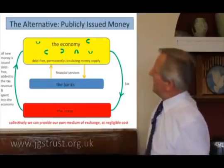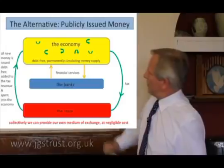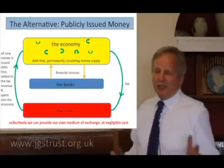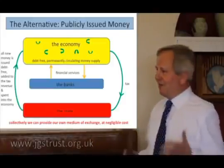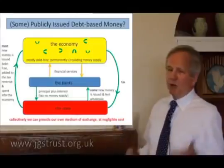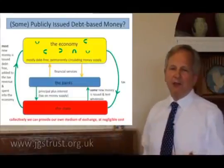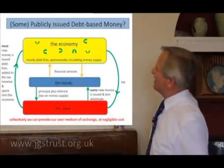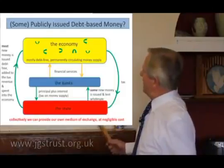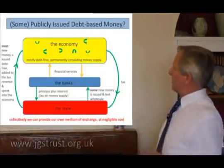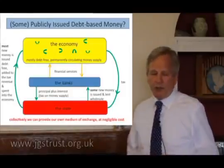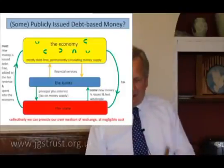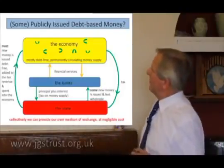We issue them into the economy through what's called the state — taking a benevolent look at it, it's what we all want to do collectively together. We all want nice roads and to drive on the same side of the road. So collectively we can provide our own medium of exchange, our own bunch of numbers, at negligible cost. You have to pay some guy to type them in, sure, but it's not a big expense. So that's the alternative which we're all working towards.